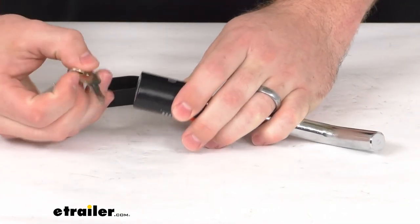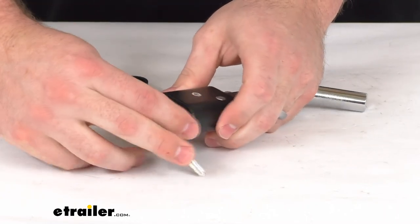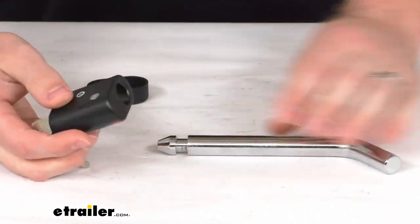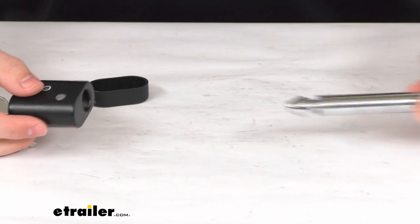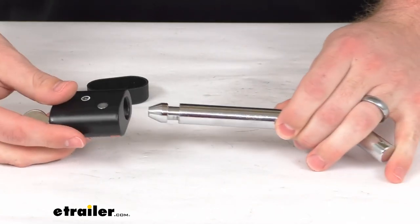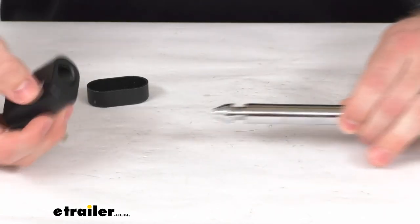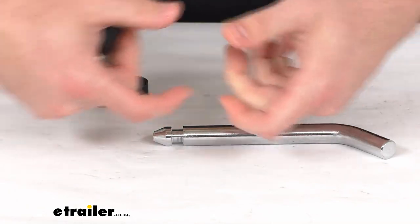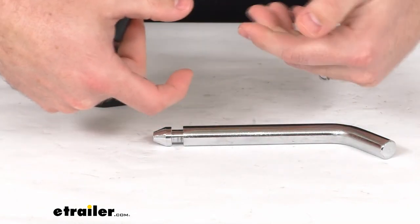This is a locking pin so we do get two keys here, very simple. Just give it a little half turn and we'll be able to disconnect it, and then when we're wanting to hook it up, just make sure that our pin hole is lined up on our tow bar and on our hitch.